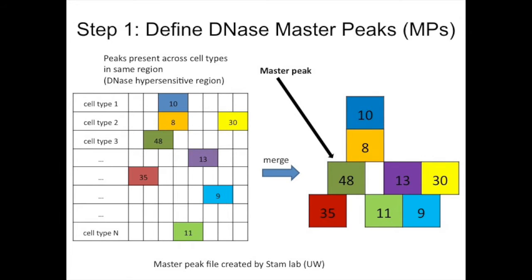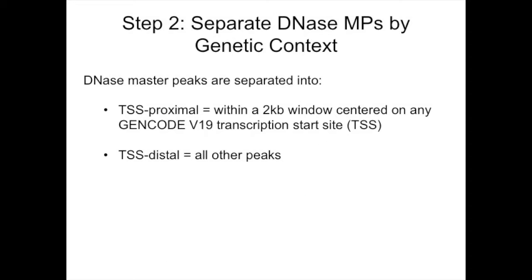After we have this list of master peaks, we separate them into two groups. We have the TSS proximal group — all the master peaks that are within a 2 kilobase window of a TSS — and then we have all the other peaks, which are the distal peaks.